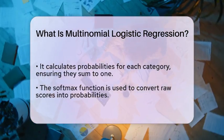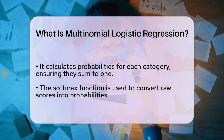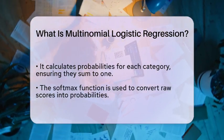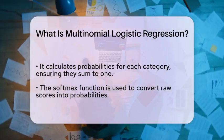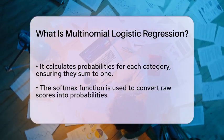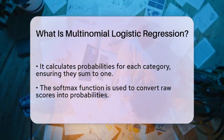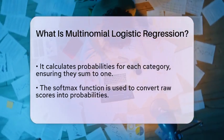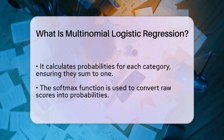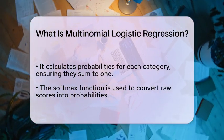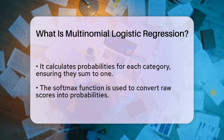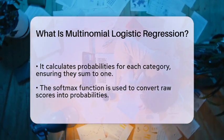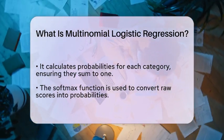The model calculates probabilities for each category, ensuring that the total probability across all categories equals one. This is achieved through the use of the softmax function, which transforms the raw scores from the model into probabilities.